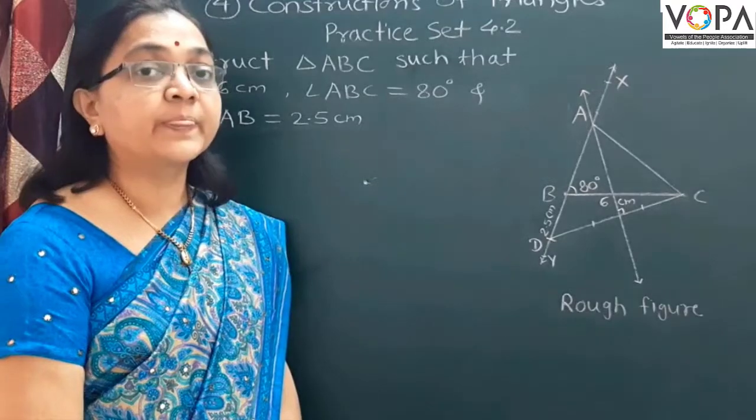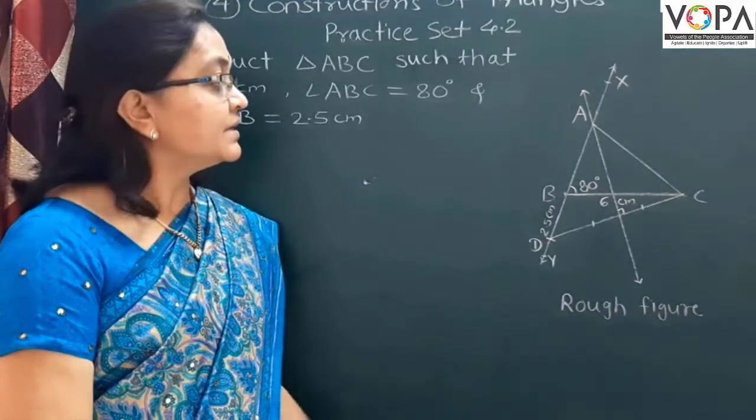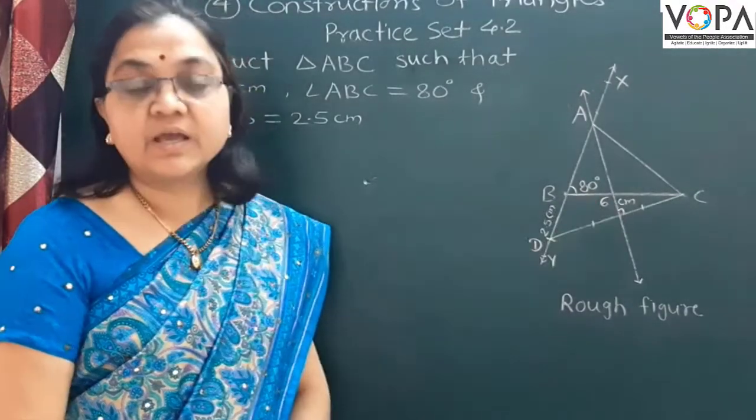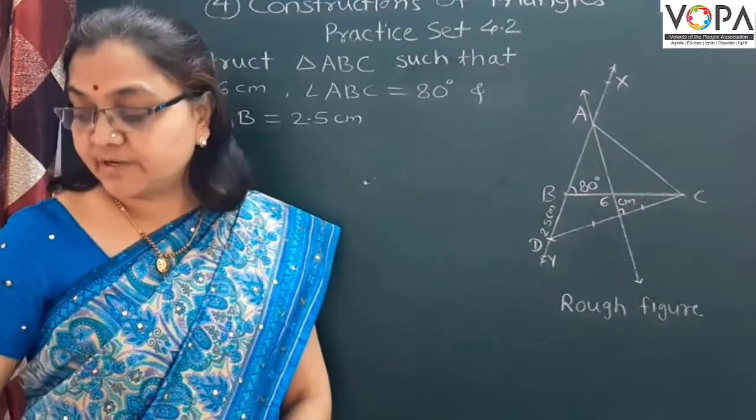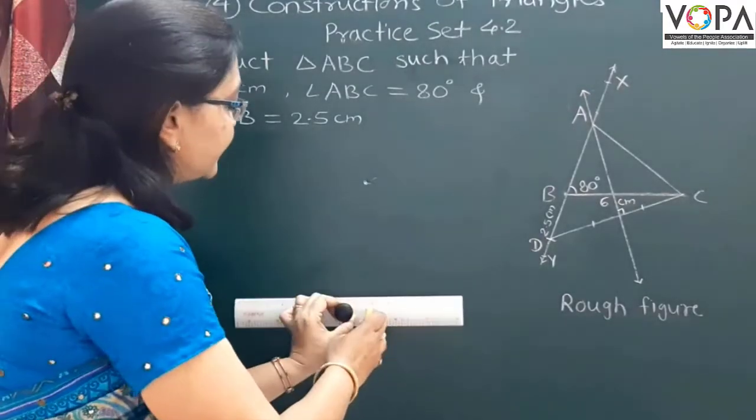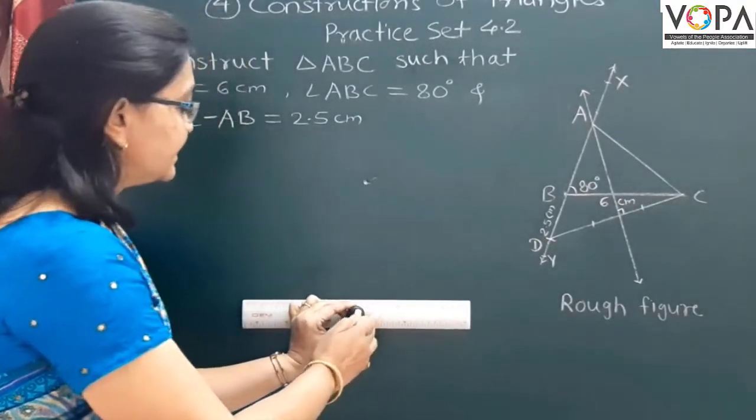First step is to draw the base of the triangle. Here base is BC having length 6 cm. First here, we draw the base BC.